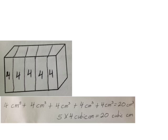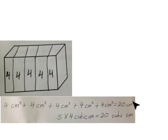We could also write it as 5 times 4 cubic centimeters equals 20 cubic centimeters. Notice there are two ways to write cubic centimeters: CM with a raised 3 means cubic centimeters, or you can use the word 'cubic' and the abbreviation CM for centimeters. They both mean cubic centimeters.